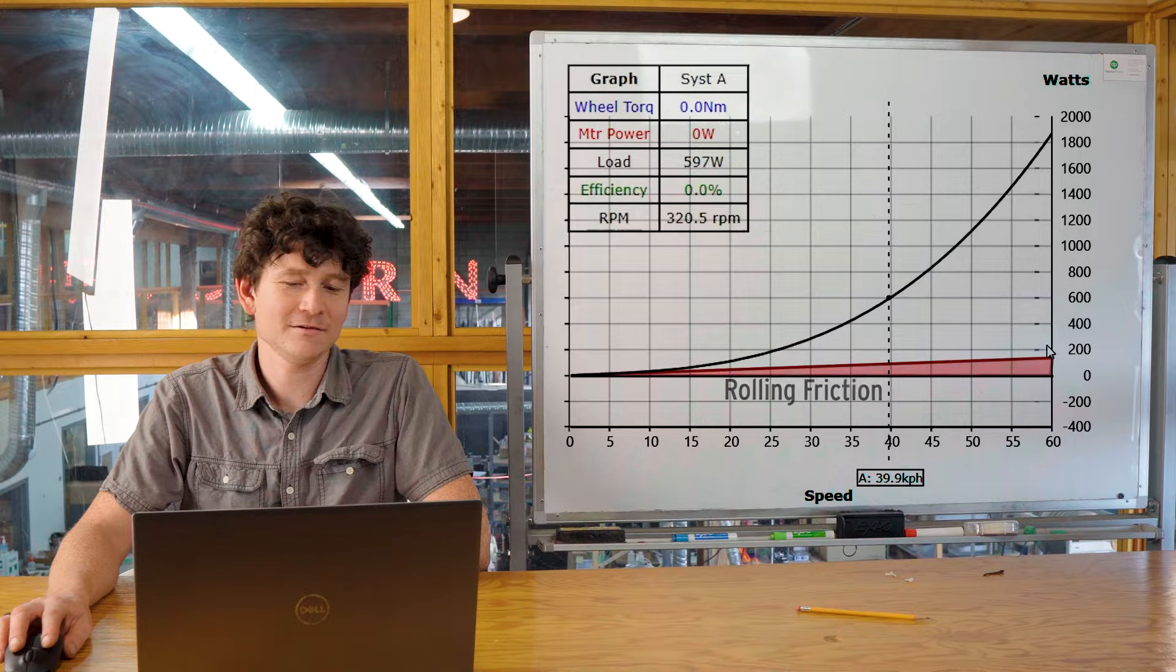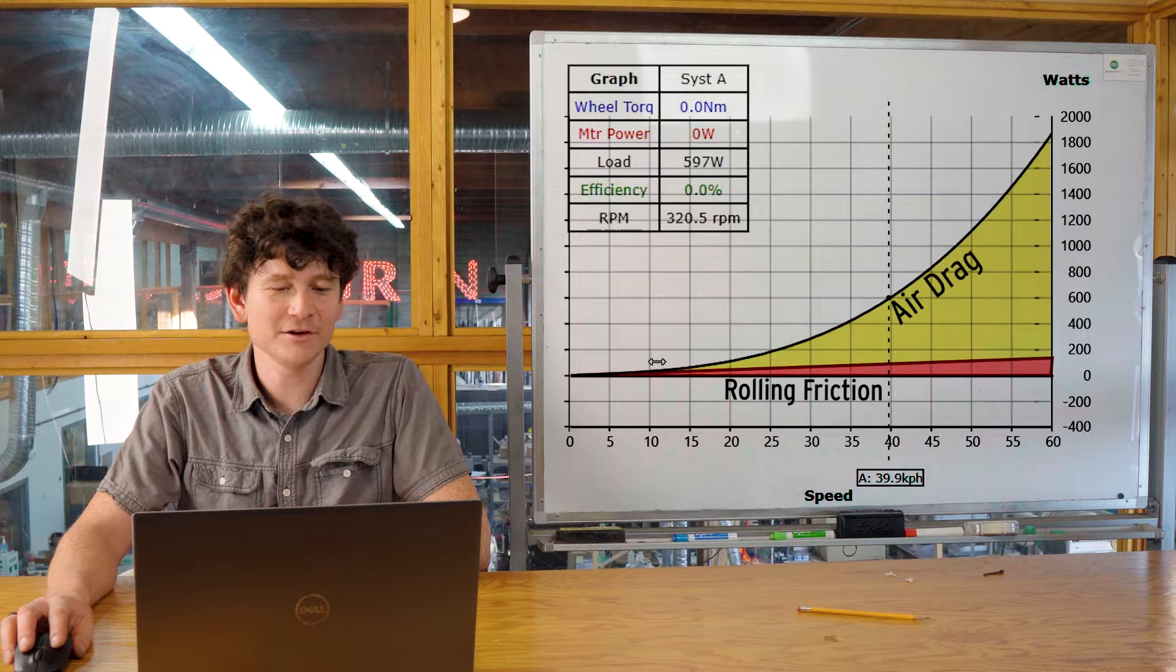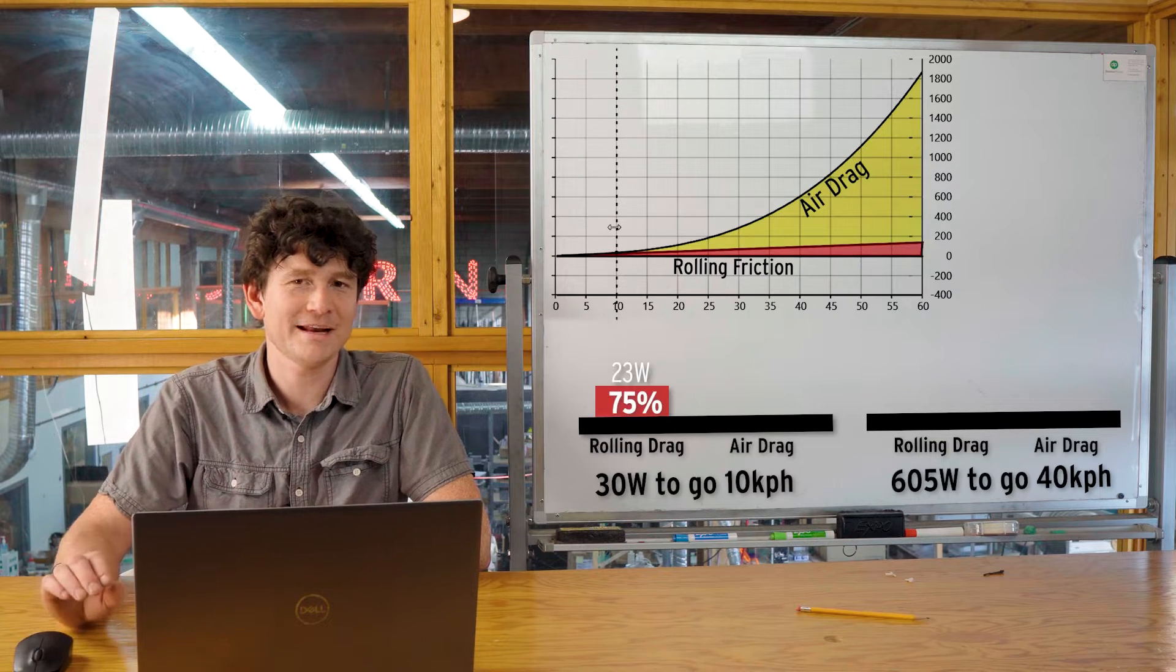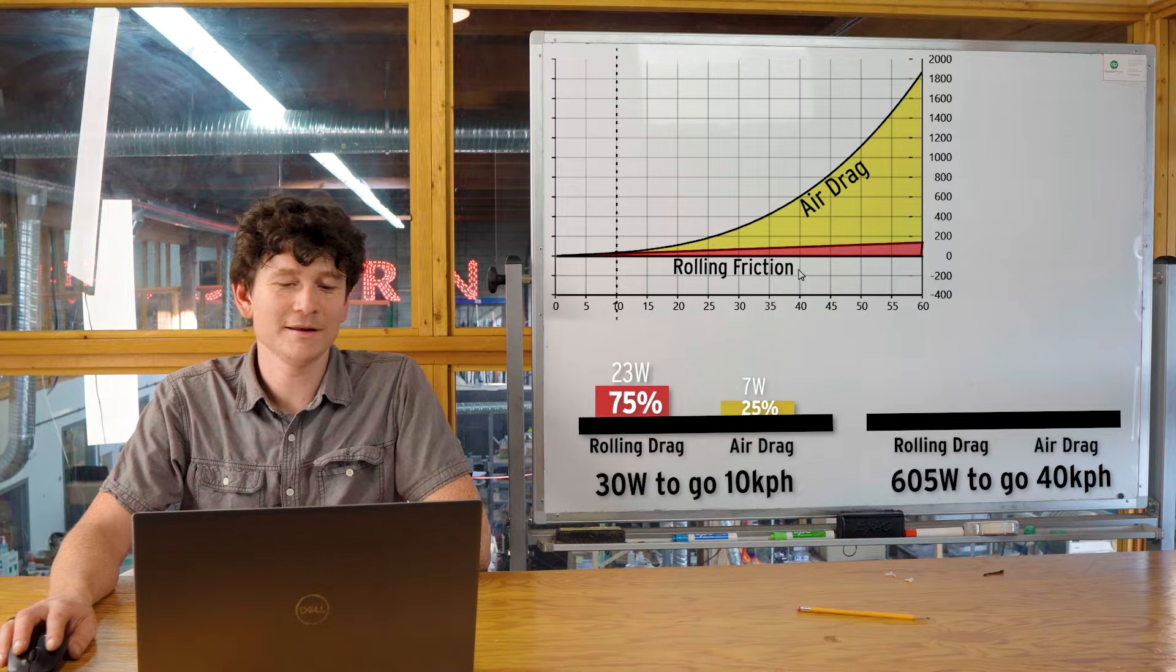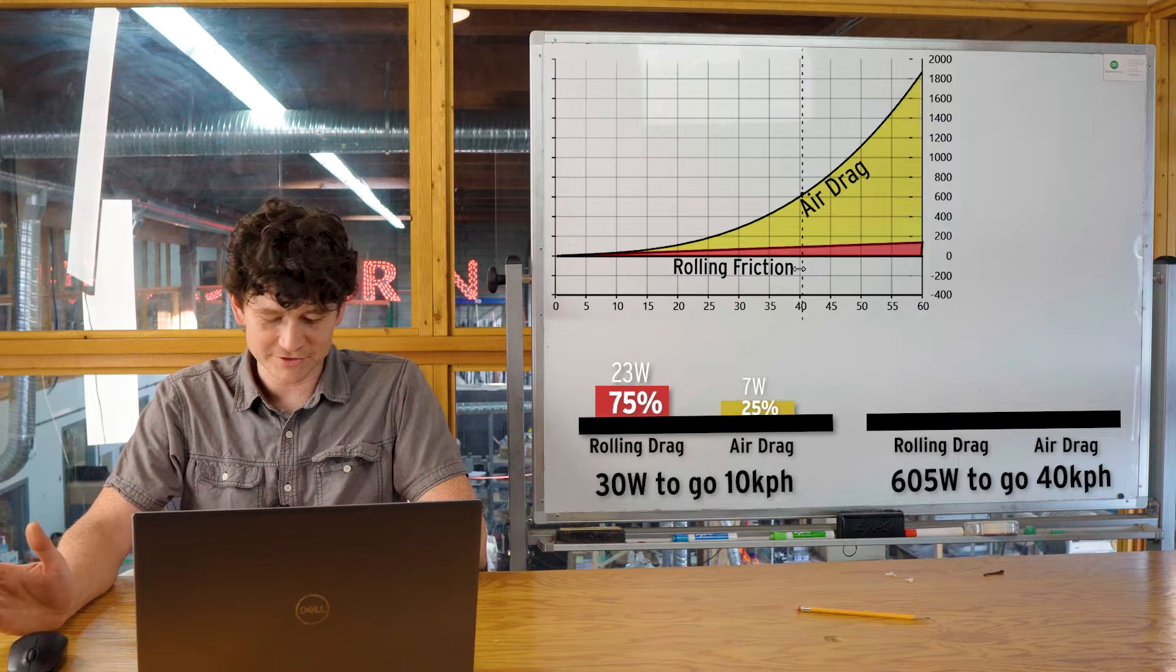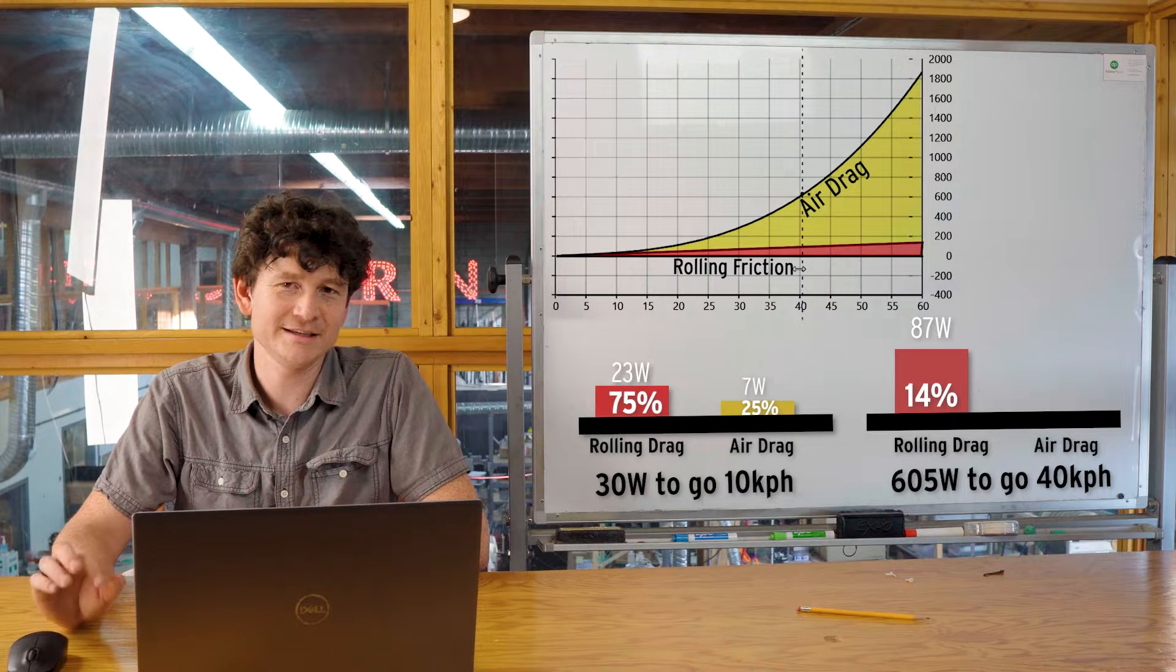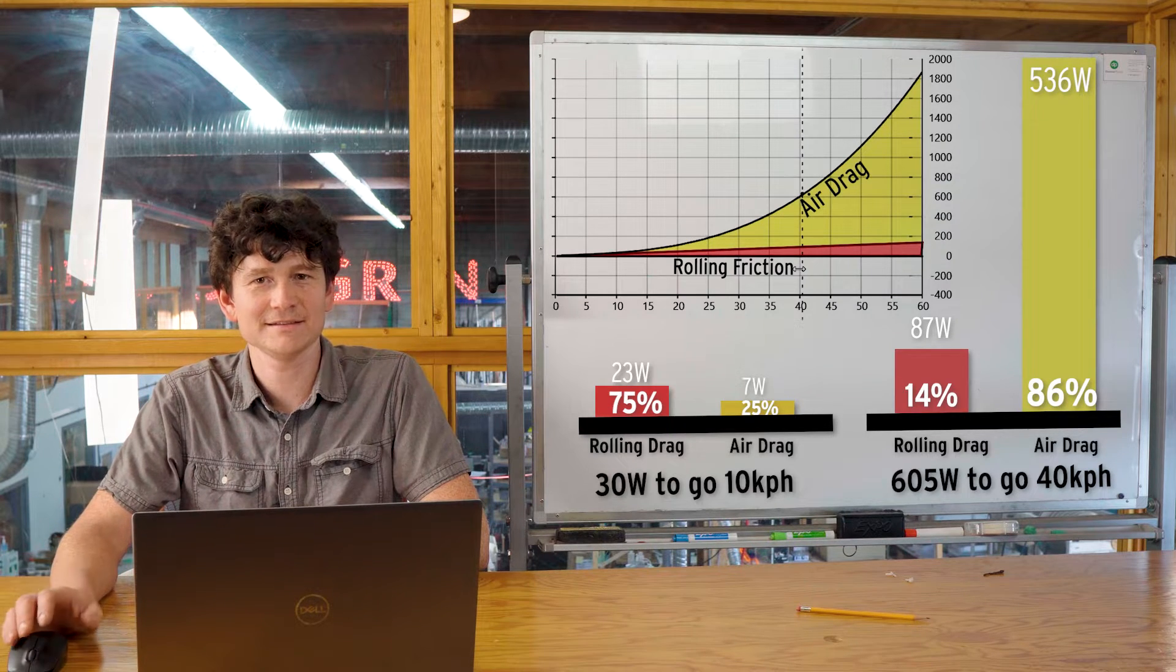In this plot, we've divided the losses due to rolling resistance compared to air resistance. At very low speeds like 10 kilometers an hour, more than 75% of that 30 watts goes into tire friction. Meanwhile, at 40 kilometers an hour, the situation is more or less inverted. Only 14% of the energy goes into rolling drag, and 86% is overcoming air resistance.